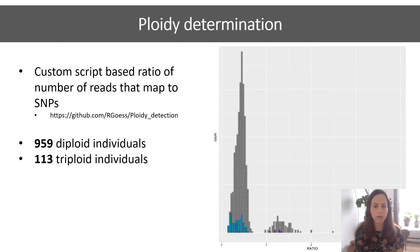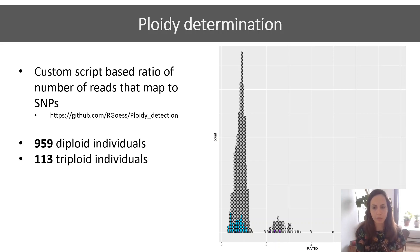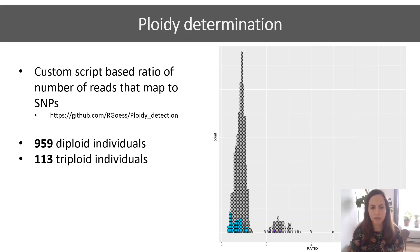I then determined ploidy with a custom script based on allelic depth for my GBS data. The results give a ratio per individual and are plotted as seen on the right. We see two groups: one of diploids in the left cluster and one cluster on the right which are triploids. For around 100 samples, we knew the ploidy before we started the project because they were tested with flow cytometry. Known diploids are depicted in cyan and known triploids in purple. We can see that all samples cluster to the correct group except one purple individual. In total, we identified 959 diploids and 113 triploid individuals.